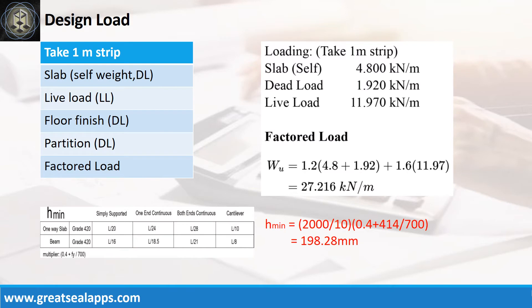The uniform load for 200 mm thick slab is 4.8 kN per meter. A heavy storage live load is 11.97 kN per meter. Other dead load like floor finish and partition is 1.92 kN per meter for a factored load of 27.216 kN per meter.